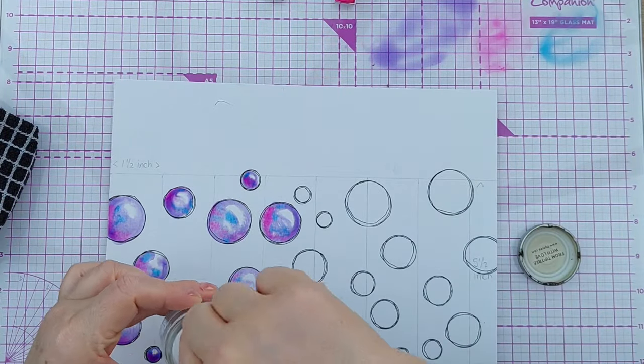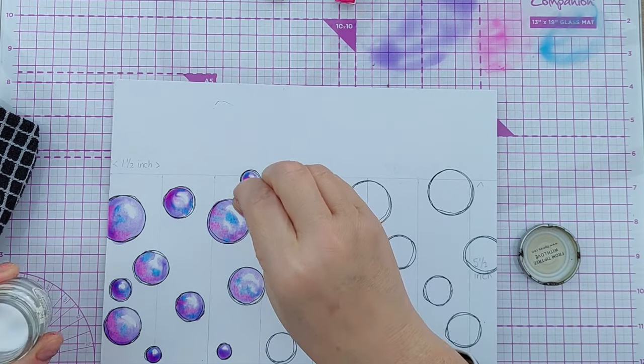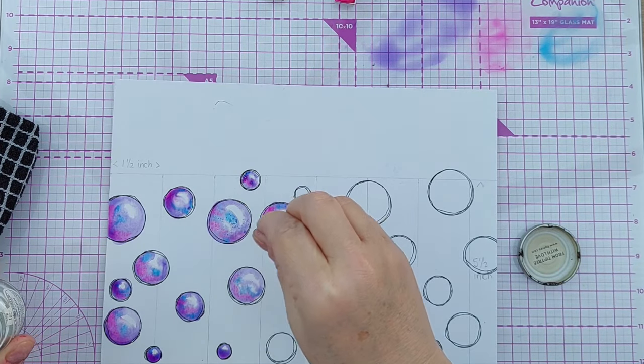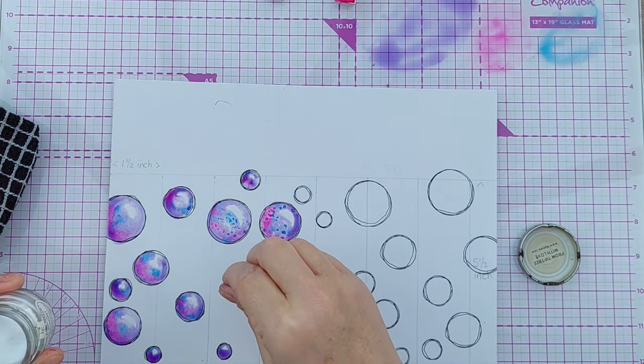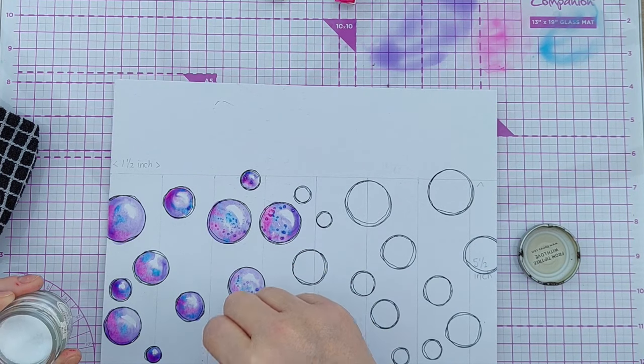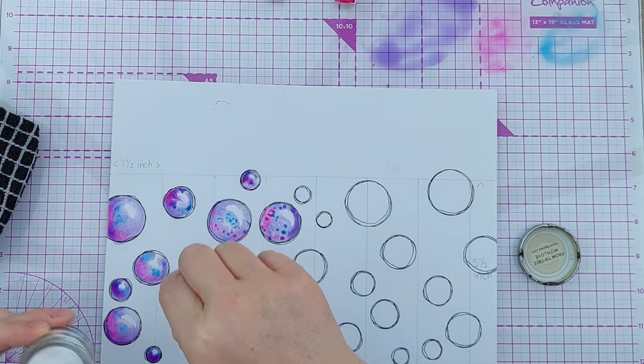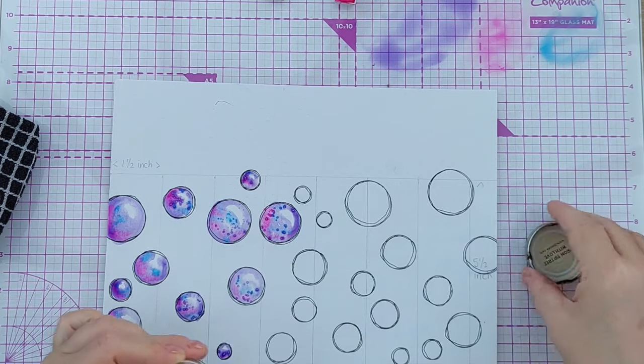One thing you can do for a bit of visual interest is sprinkle on a bit of salt, and this will make the watercolor pool in different ways. So I might do that on a couple of panels. Move that to dry.